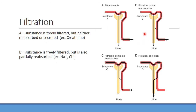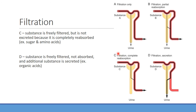Looking at filtration and secretion scenarios: in situation A — filtration only — a substance is freely filtered through the glomerulus but is neither reabsorbed nor secreted. Creatinine is a good example: it gets filtered out through the glomerulus, goes through the nephron, and is never reabsorbed by the peritubular capillaries or vasa recta. This makes it useful for measuring kidney function. In situation B, something is filtered but only partially reabsorbed — like sodium or chloride. You'll find some sodium in urinalysis, but not all of what was filtered, because a lot gets reabsorbed. Losing all your sodium would cause hyponatremia and seizures.